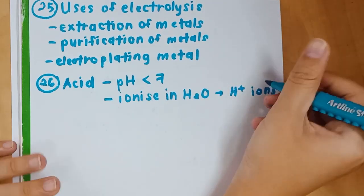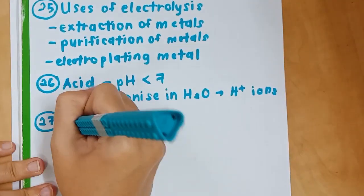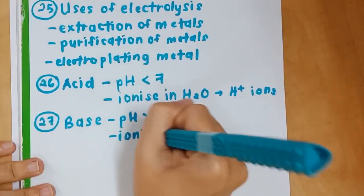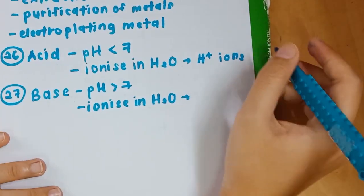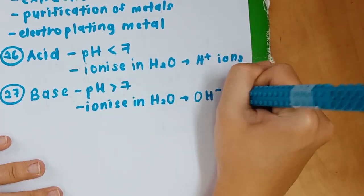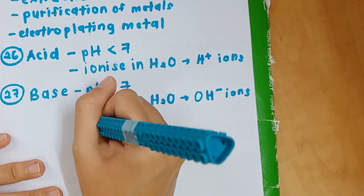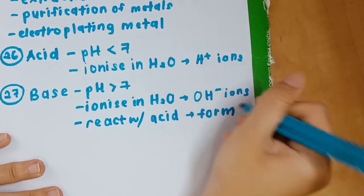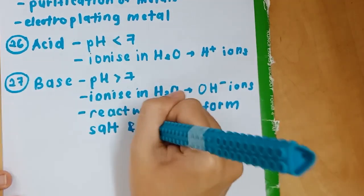The definition of acid is rather important. An acid is a substance that ionizes in water to produce H⁺ ions and its pH is lower than 7. For base, the pH is bigger than 7 and it ionizes in water to produce OH⁻ ions. But the general definition we use is that base is a substance which reacts with acid to form salt and water.